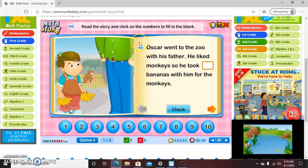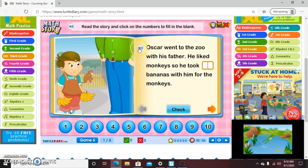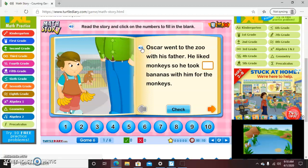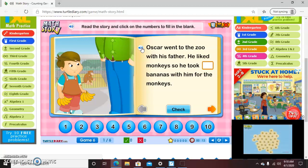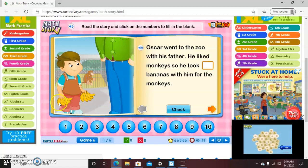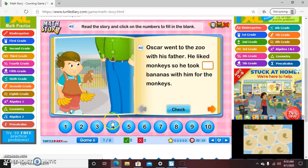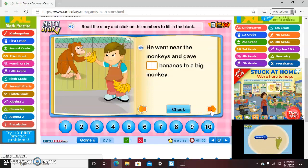Click on the numbers to fill in the blank. Oscar went to the zoo with his father. He liked monkeys, so he took bananas with him for the monkeys. And then you would count. One, two, three, four, five, six, seven, eight, nine, ten. And you'd find the ten. You can check it. Wonderful. Then you would go on. He lived near the monkeys and gave bananas to a big monkey. You figure out how many he gave to the monkey. So it looks like one, two, three. Fantastic.